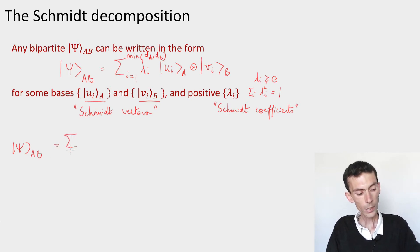In that case, I would be able to write it as the sum over i and j of some coefficients cij, i on Alice, tensored j on Bob.